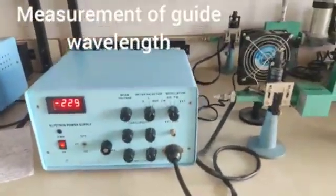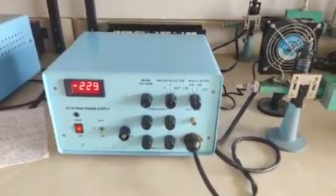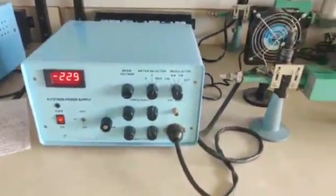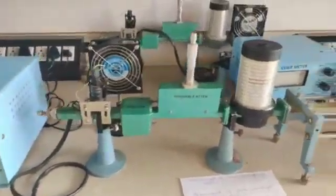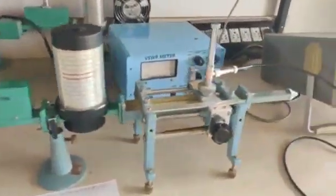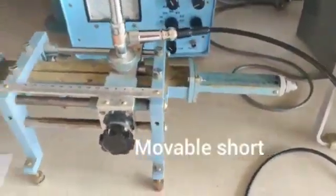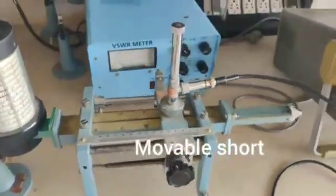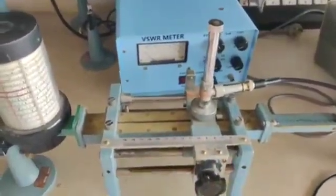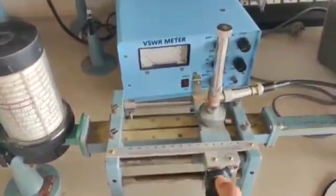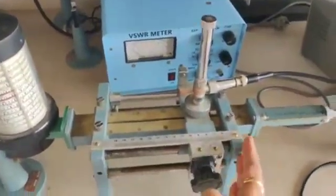Next is measurement of guide wavelength. Here no need to change any settings. Without disturbing the setup, we just replaced horn antenna by movable short. Now we can take from either rightmost side or leftmost side. We can change the scale reading. Now I am starting from rightmost side.